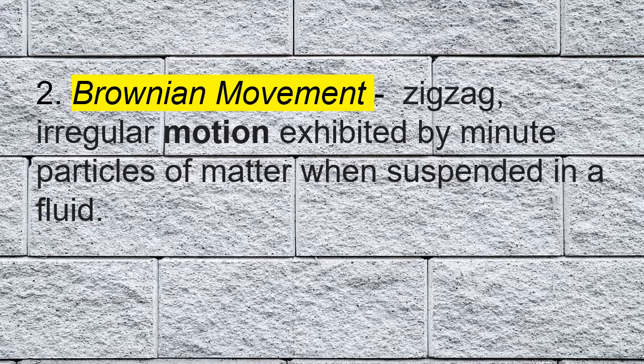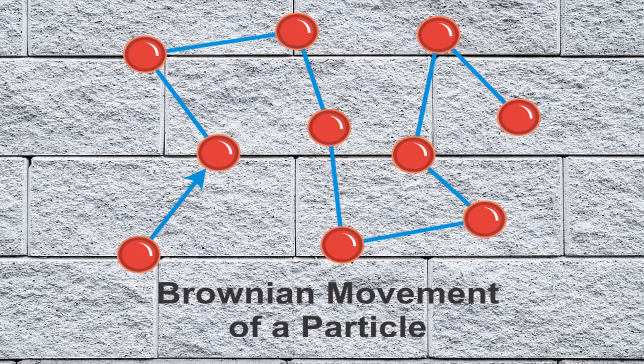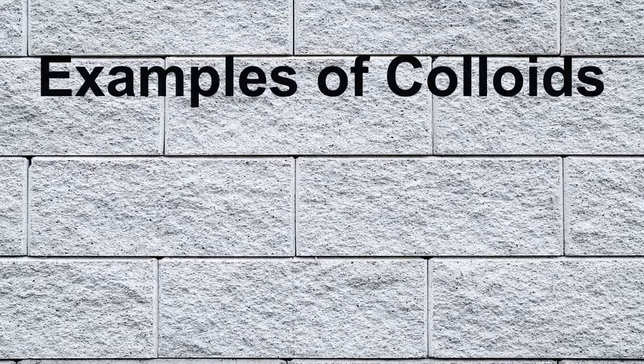Another property is Brownian movement. This is the zigzag, irregular motion exhibited by minute particles of matter when suspended in a fluid. If you look at the particles of the colloid you will see the zigzag movement of the particles. You can see this when you use a microscope.